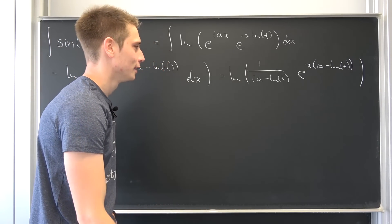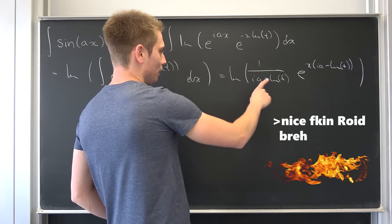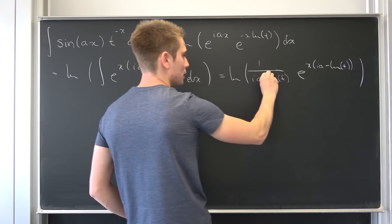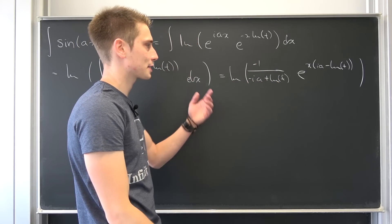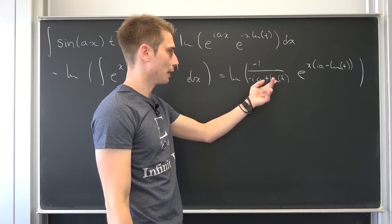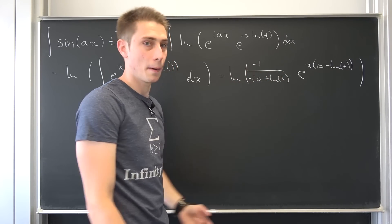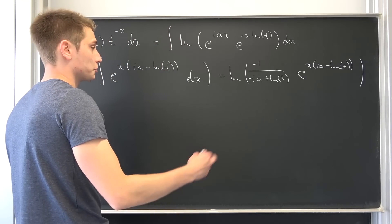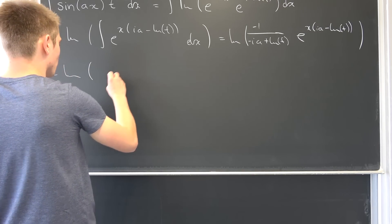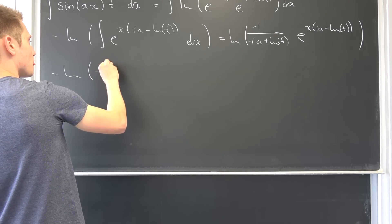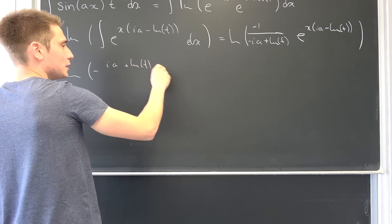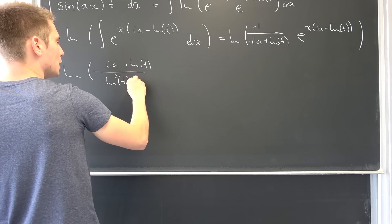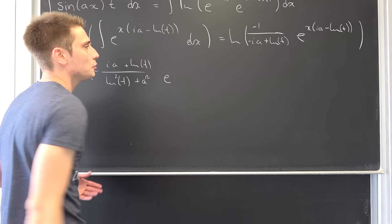My throat hurts. Now, to extract the imaginary part from this thing, we have to factor out negative 1, so we already have the complex conjugate of this complex number: natural log(t) + i·a. We are going to expand this fraction by (natural log(t) + i·a) over (natural log(t) + i·a), giving us the imaginary part of (−i·a + natural log(t)) and down here we have the norm squared, meaning we get over (natural log²(t) + a²).